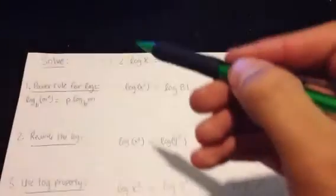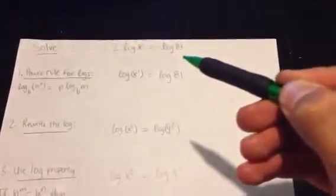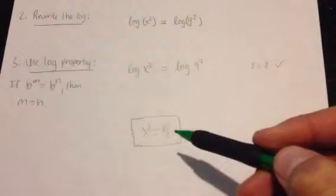So, if you solve 2 times the log of x is equal to log of 81, the answer is x is equal to 9.